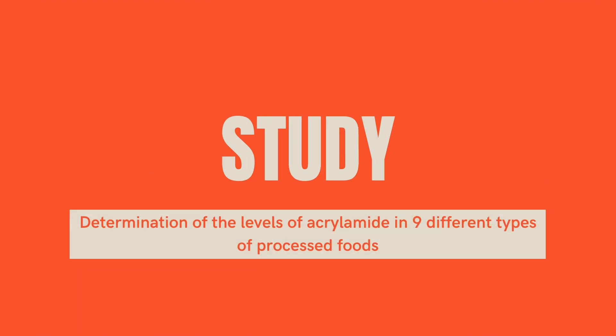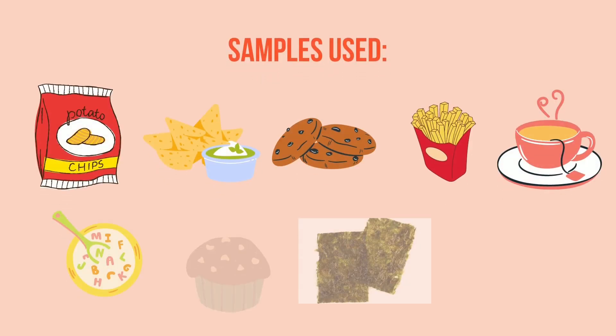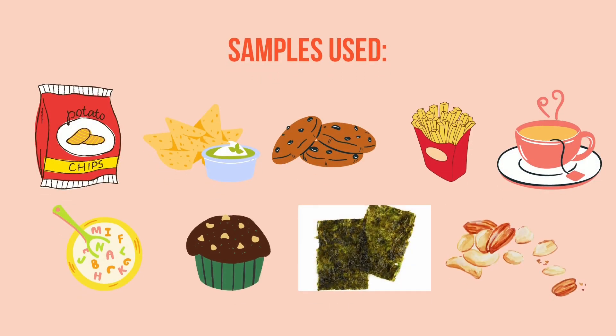A study was conducted to determine and analyse the level of acrylamide in 9 different types of processed foods: potato chips, non-potato chips, biscuits, french fries, tea, breakfast cereals, chocolate products, seasoning, and nut products.